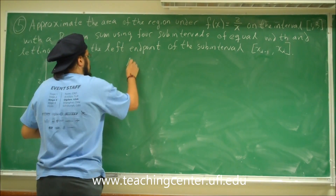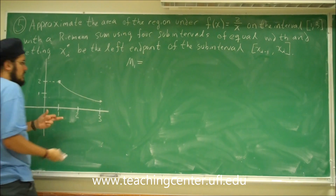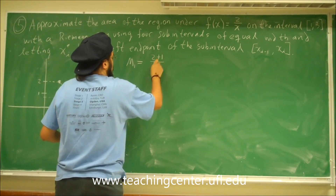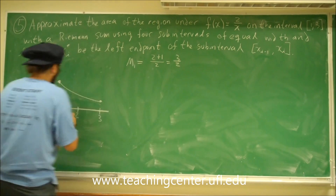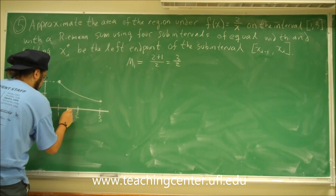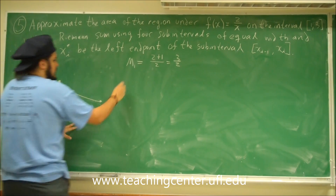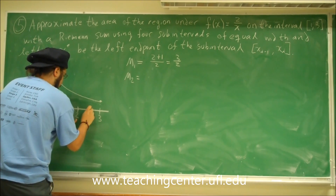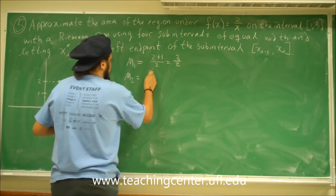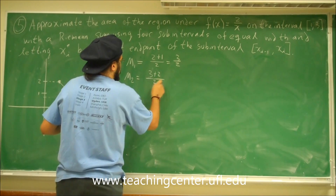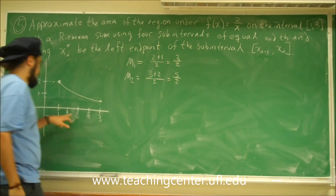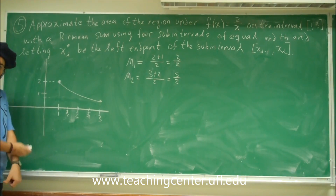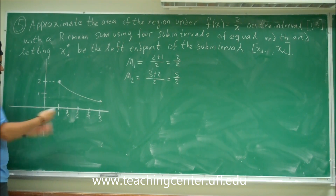Now I'll find the midpoints of each subinterval. The midpoint between 1 and 2 — add up the x's and divide by 2: (1+2)/2 = 3/2. And likewise for m2, the midpoint between 2 and 3 is (2+3)/2 = 5/2. So that gives us 1, 2, 3, 4 subintervals of equal width.